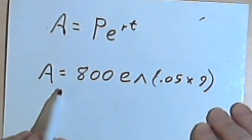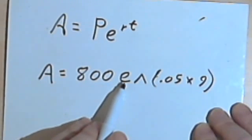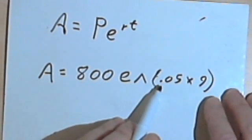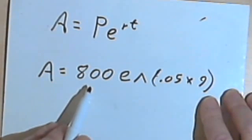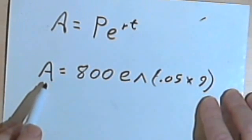So you're just going to have something like this in your calculator: 800 times e, raised to the, and then in parentheses, 0.05 times 9, press the enter button, and you'll get your result.